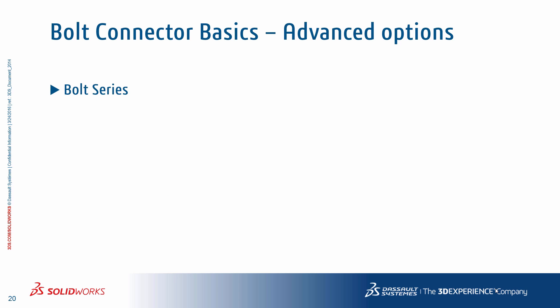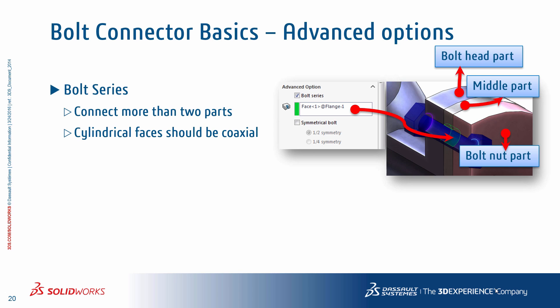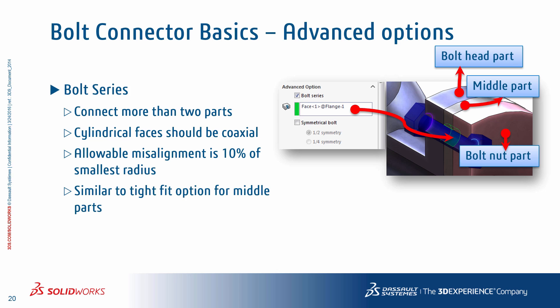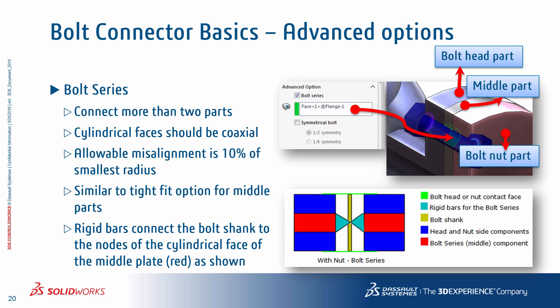One of the advanced options in a bolt connector definition is the ability to connect more than two parts that have coaxial cylindrical through holes. For example, in the image shown, there's a compression gasket — the middle part — sandwiched between the flange plates, which are bolted together. Using the bolt series checkbox option, you can select the through hole face of the middle part, connecting it to the bolt connector. The allowable misalignment of the through holes is roughly 10% of the smallest radius, and this behaves much like a tight-fit option for that middle part. Behind the scenes, the program creates rigid elements (shown in light blue) to connect the bolt shank to the nodes of the cylindrical face of the middle plate (shown in red), meaning that cylindrical face will be rigid and will not compress or show deformation.